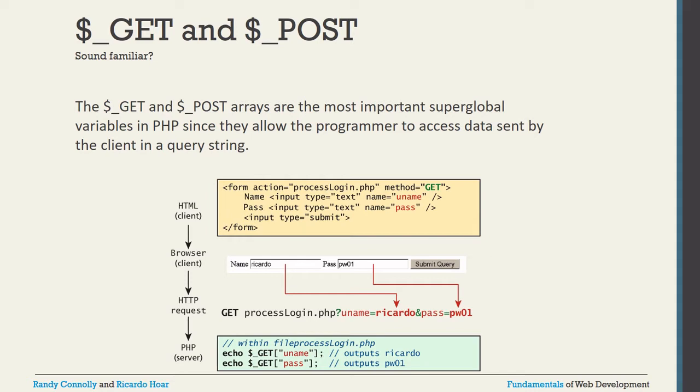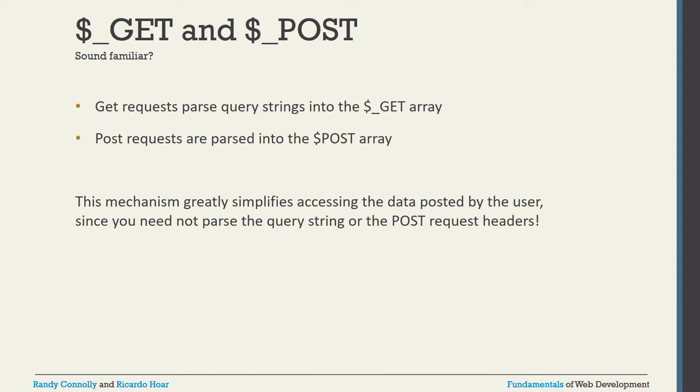The flow goes from the HTML client in the browser, to an HTTP request, to the PHP server. In this direction all information is passed with the help of $_GET and $_POST. GET requests are parsed into the $_GET array and POST requests are parsed into the $_POST array. When you specify method equal to GET in your form, use $_GET; when you specify method equal to POST, use the $_POST array.